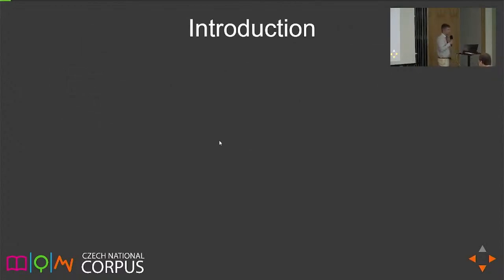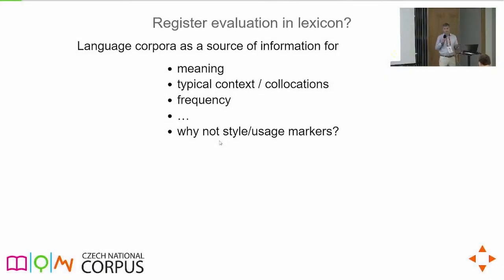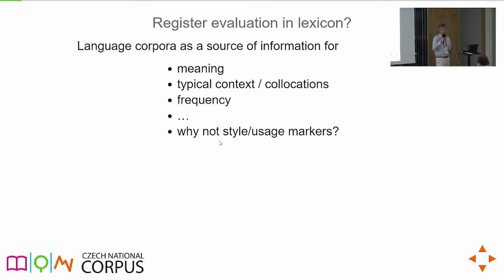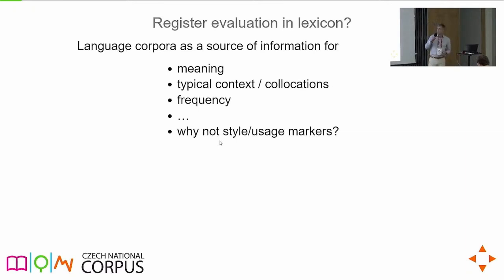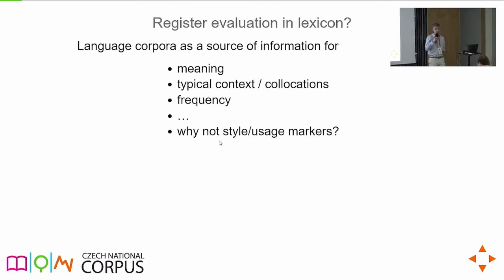Let's start with a simple, obvious statement. We use corpora for several things: extracting meaning of units, extracting typical collocations, and obviously extracting information about frequency. So why not extract the style, usage labels, or usage markers — I'll use these terms as synonyms. Is there a way to do this in a data-driven and perhaps more linguistically informed way?